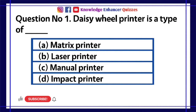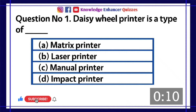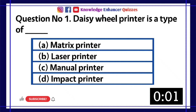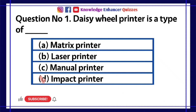Question number 1. Daisy Wheel Printer is a type of dash? A. Matrix Printer. B. Laser Printer. C. Manual Printer. D. Impact Printer. Option D is the right answer.